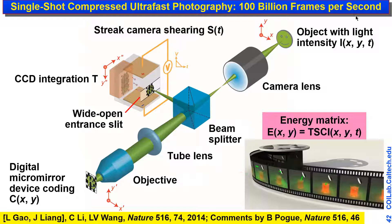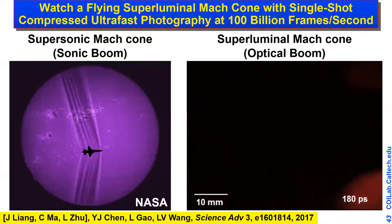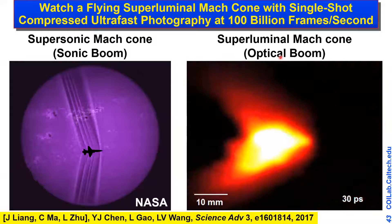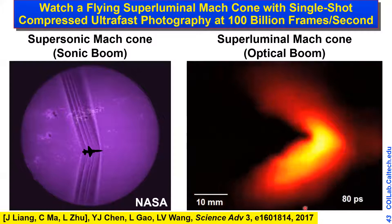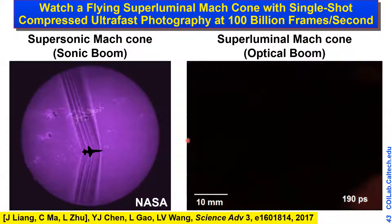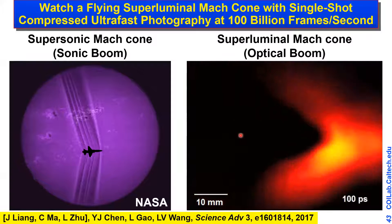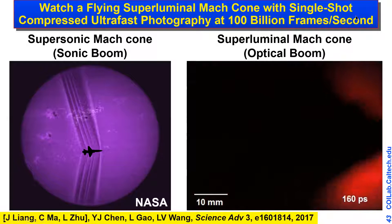One application is directly imaging the optical boom. We simulated a superluminal situation using an air gap in a piece of gel: inside the air gap light travels at vacuum speed, but inside the gel it travels at a lower speed, creating a superluminal light source. Scattered light traveling into the gel creates the optical boom, which with a single laser shot we can now directly observe — related to Cherenkov radiation.